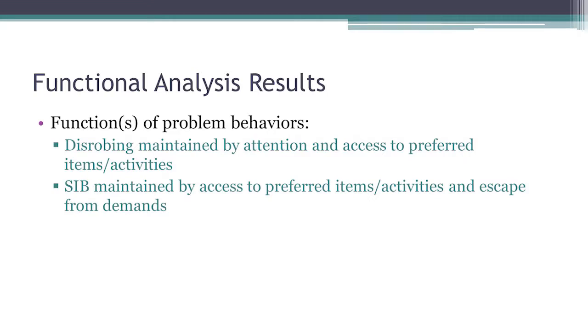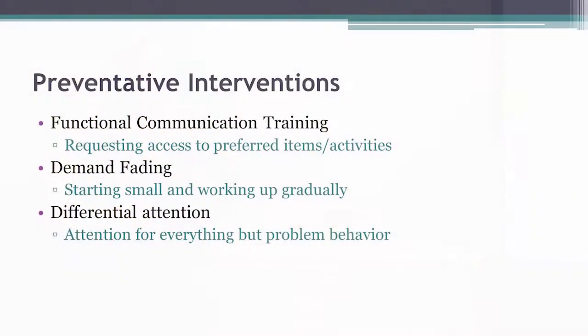To recap: disrobing was maintained by attention and access to preferred items, and his self-injury was maintained by access to preferred items and escape from demands. Escape from demands and access to preferred items can go hand in hand — if I escape my work, sometimes I also get access to what I want. We used antecedent and consequence interventions. Antecedent or preventative interventions are things we do before the behavior occurs. The three we used for Michael are functional communication training, demand fading, and differential attention.